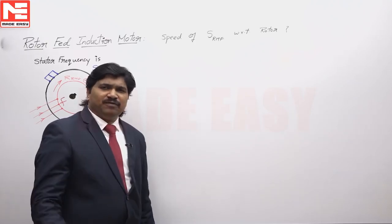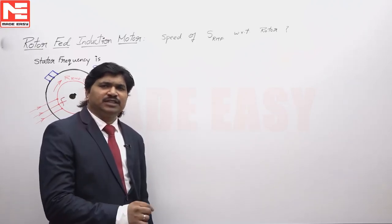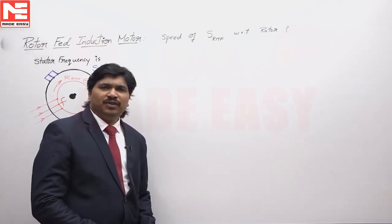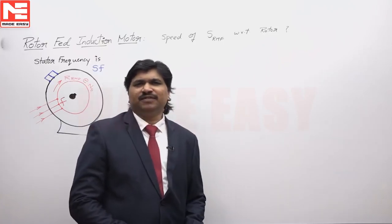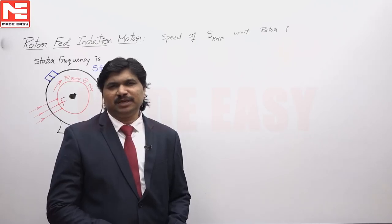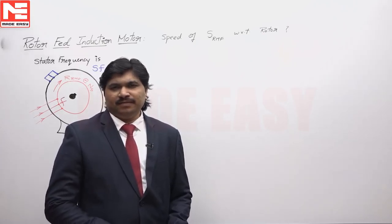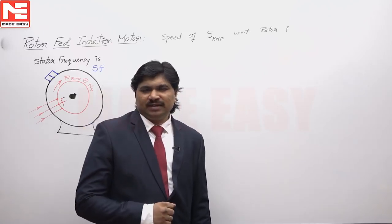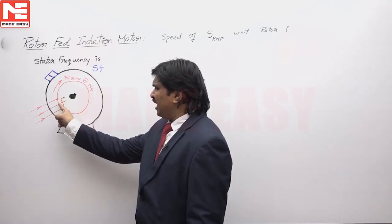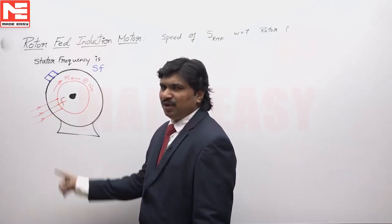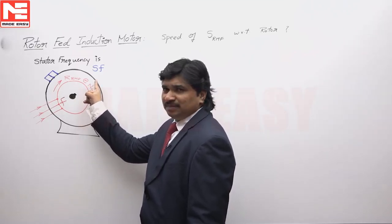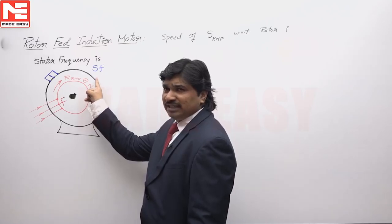Conventionally with a slip ring induction motor, we operate through the stator. But if you are asked to operate through the rotor, the analysis is as follows: whenever we apply three-phase supply across a three-phase winding, an RMF is produced which rotates at synchronous speed. If the rotor contains a three-phase winding and you apply three-phase supply across it through slip rings, it will immediately produce an RMF rotating at NS. This RMF cuts the stator and induces a voltage in the stator.